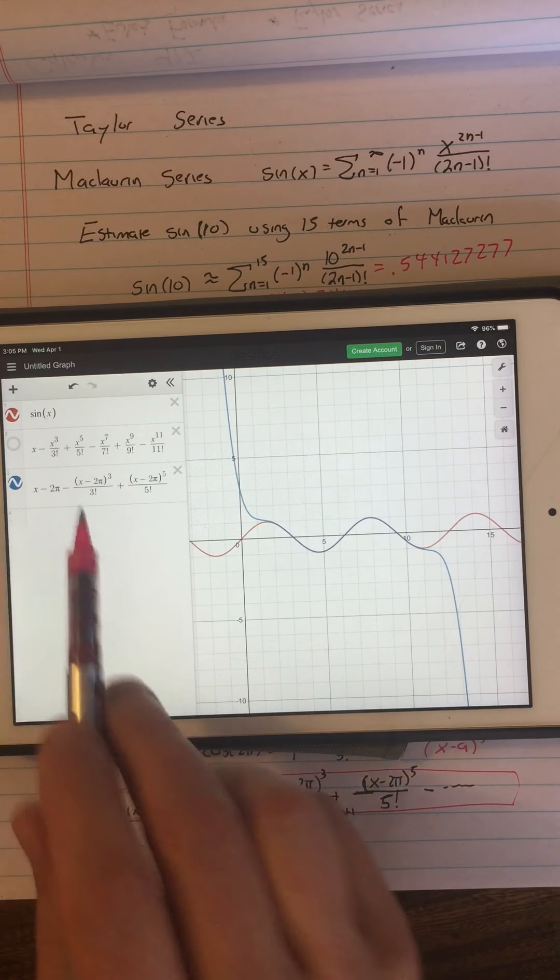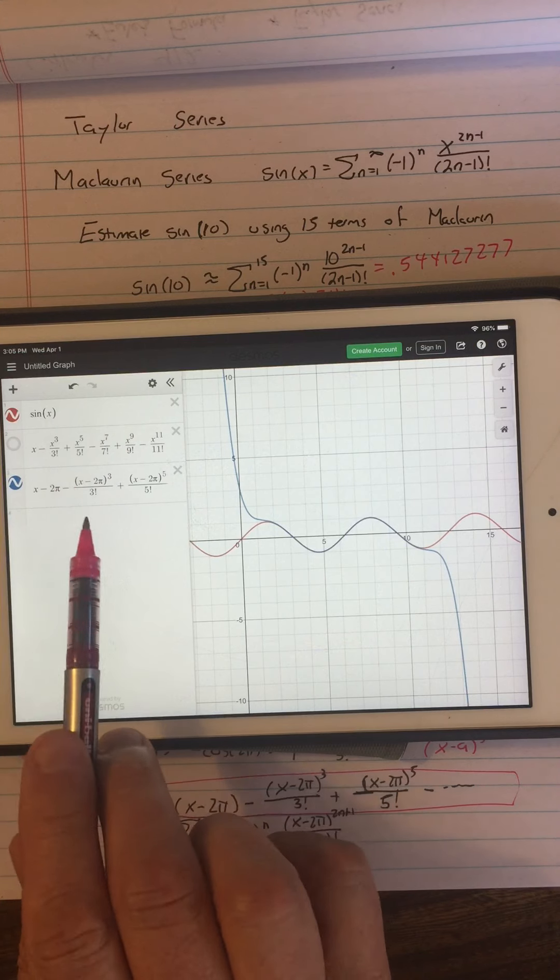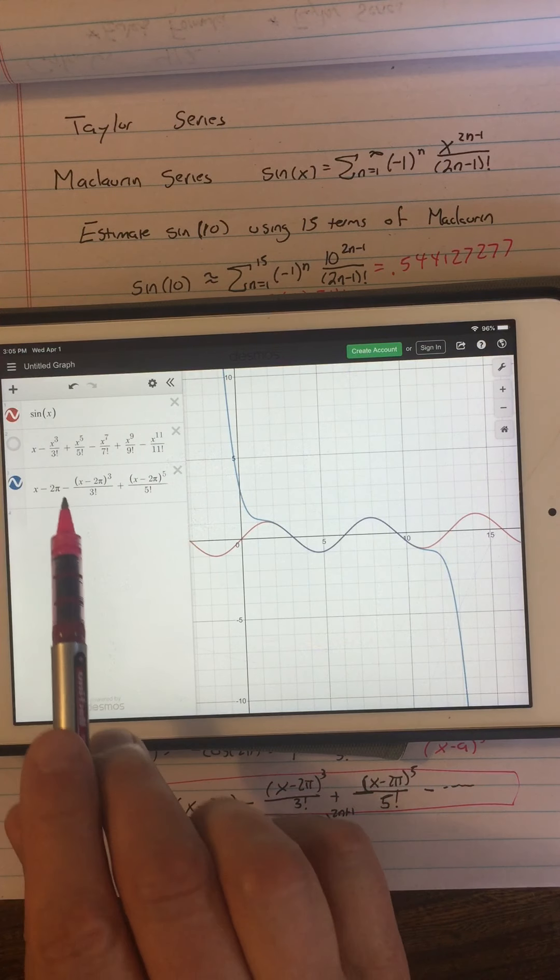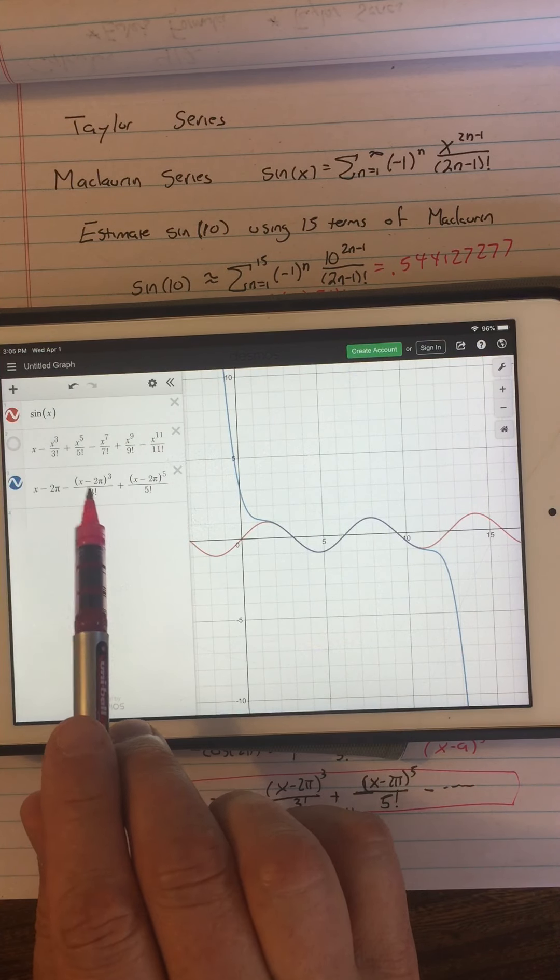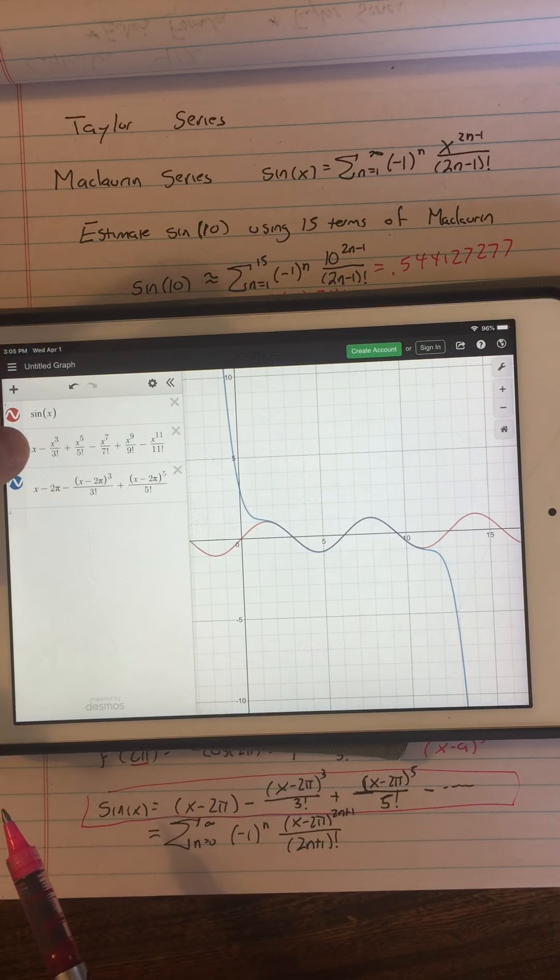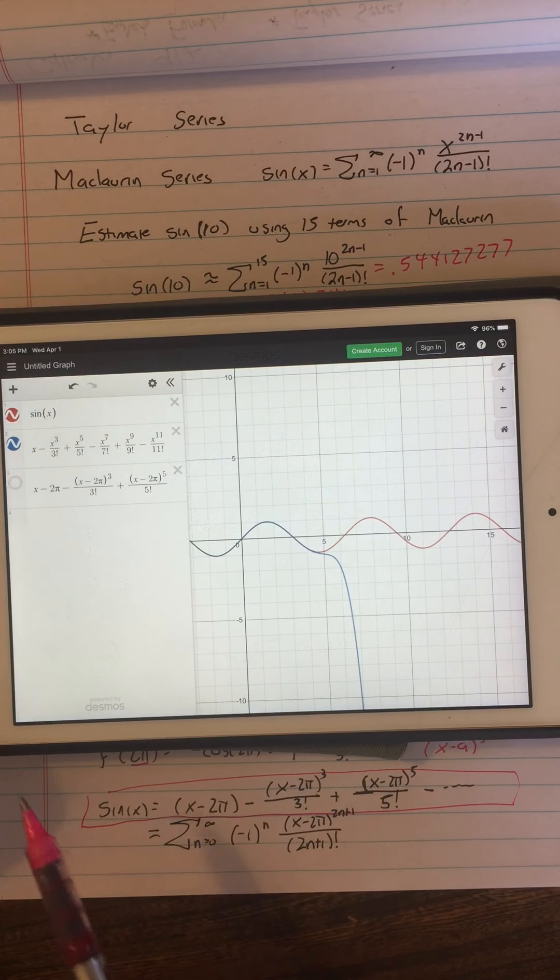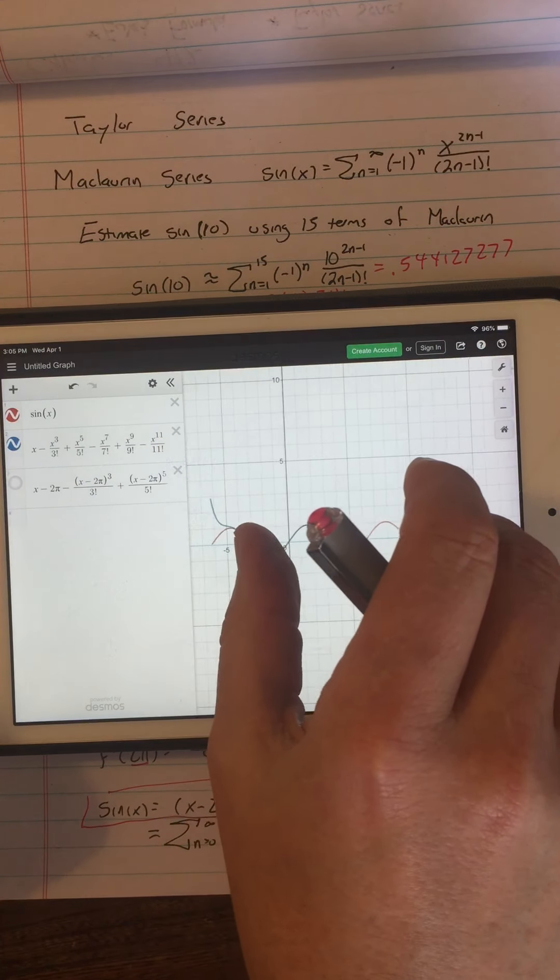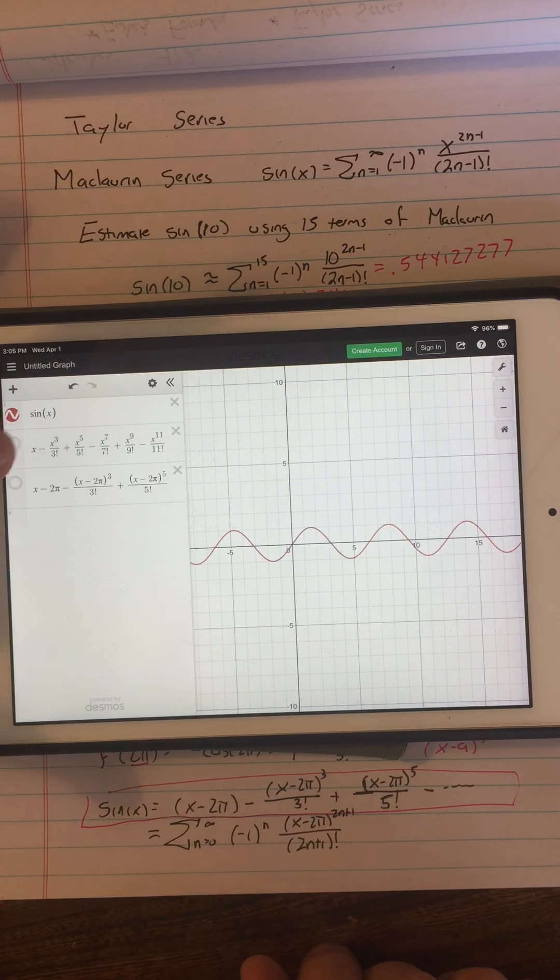By the way, you can also see what happens between these two is, if you look at these functions in terms of transformations, this function is just a horizontal shift of the function above it. Now, that doesn't always happen with Taylor and Maclaurin series. It's particular to the sine function because the sine function is periodic. So here's Taylor at 2π, here's Maclaurin, which is really Taylor at 0, and Taylor at 2π.